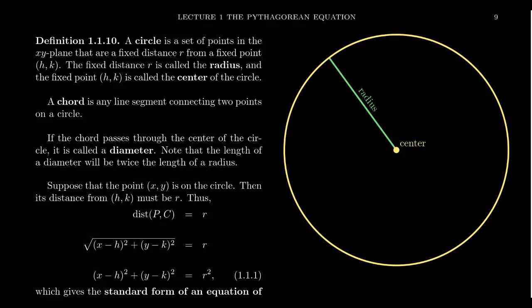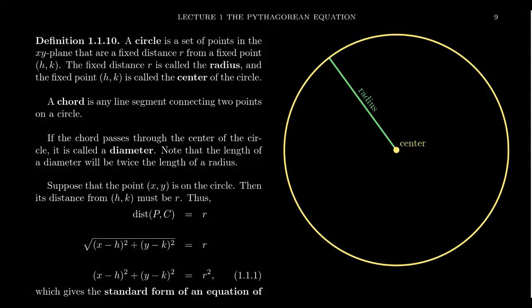Triangles are very important in trigonometry, right triangles especially, but equally important to triangles is the study of circles. Circles are extremely important in trigonometry, so let's remind ourselves what a circle is from an analytic geometry perspective. A circle is the set of all points in the plane which are a fixed distance, r, from some fixed point h comma k.